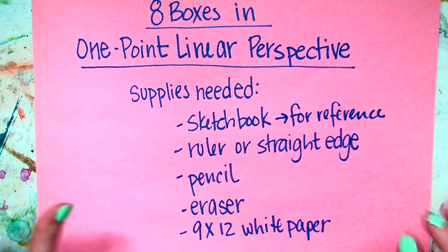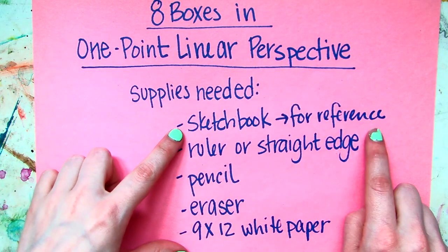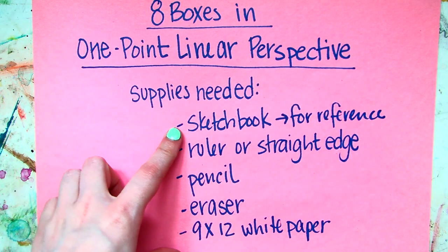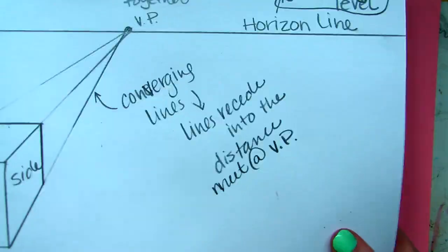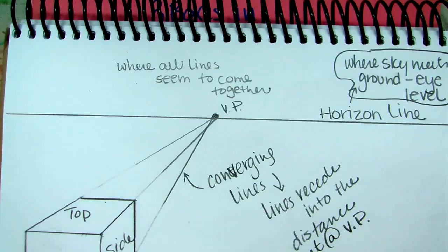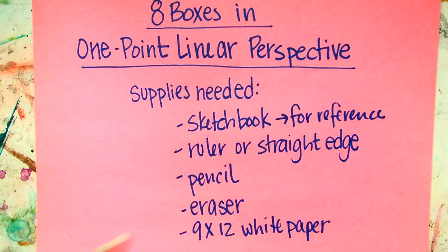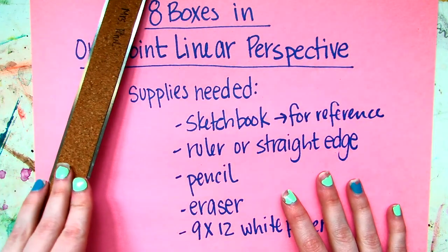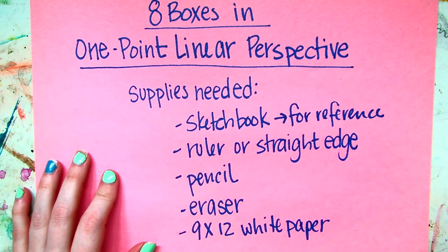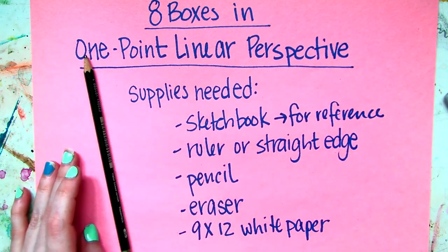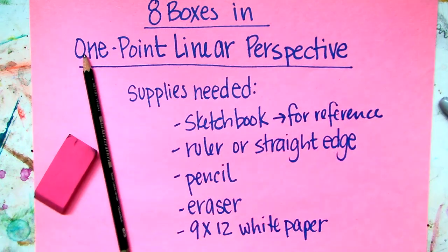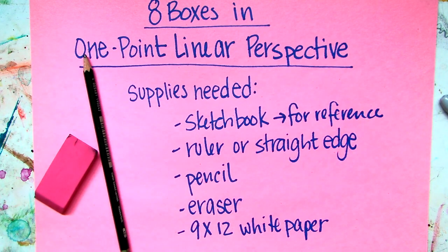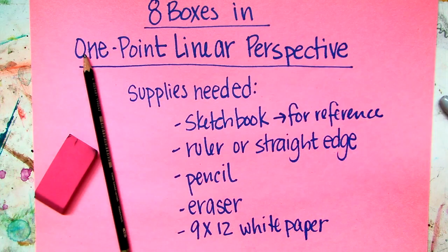For the supplies you're going to need, you're going to need your sketchbook for reference, that sketchbook page that you just created that shows you how to do it with all your definitions. You're going to need your ruler or your straight edge. Your pencil and definitely an eraser. You're also going to need a 9 by 12 white sheet of drawing paper that you can get up in the front just like all the other supplies.